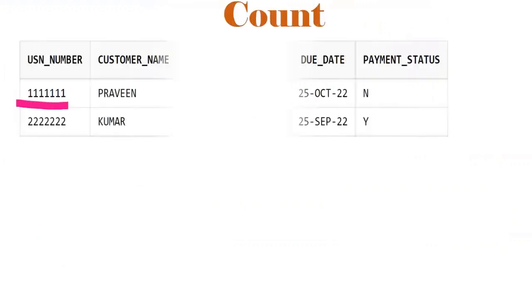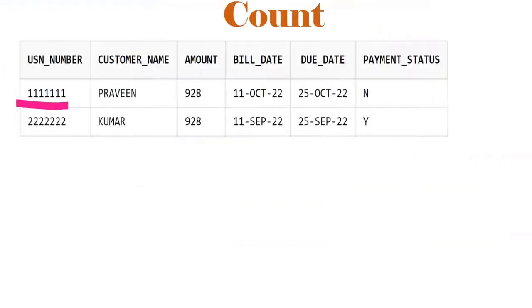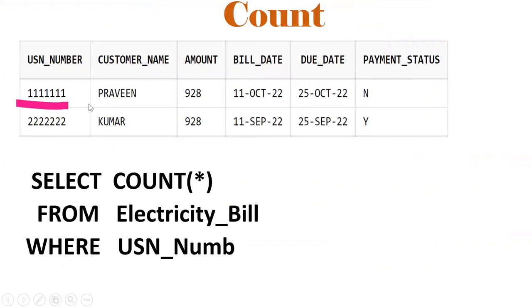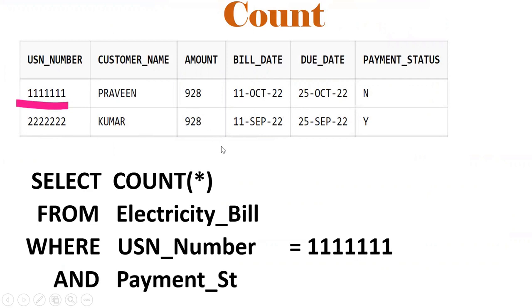COUNT is an aggregate function. If you see this table — SELECT COUNT(*) FROM electricity_bill — it will give two records. But if I use WHERE USN_number equals a specific value with payment_status equals 'Y', we get one record. COUNT will be 1.